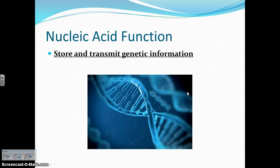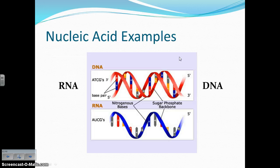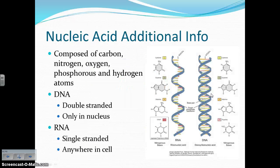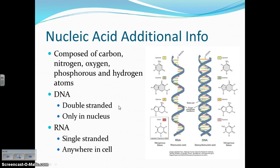Their function is to store and transmit genetic information. Genetics is my most favorite topic in all of biology, so do not forget that DNA and RNA are nucleic acids responsible for genetic information. Our two examples of nucleic acids are RNA, ribonucleic acid, and DNA, deoxyribonucleic acid — and we'll talk lots more about those. They're composed of carbon, nitrogen, oxygen, phosphorus, and hydrogen atoms. DNA is double-stranded, which is why it stays in the nucleus of cells that have a nucleus. RNA is single-stranded, which means it can travel in and out of the nucleus because it's smaller — it can go anywhere in the cell, particularly to the ribosome, where it's used to make proteins.